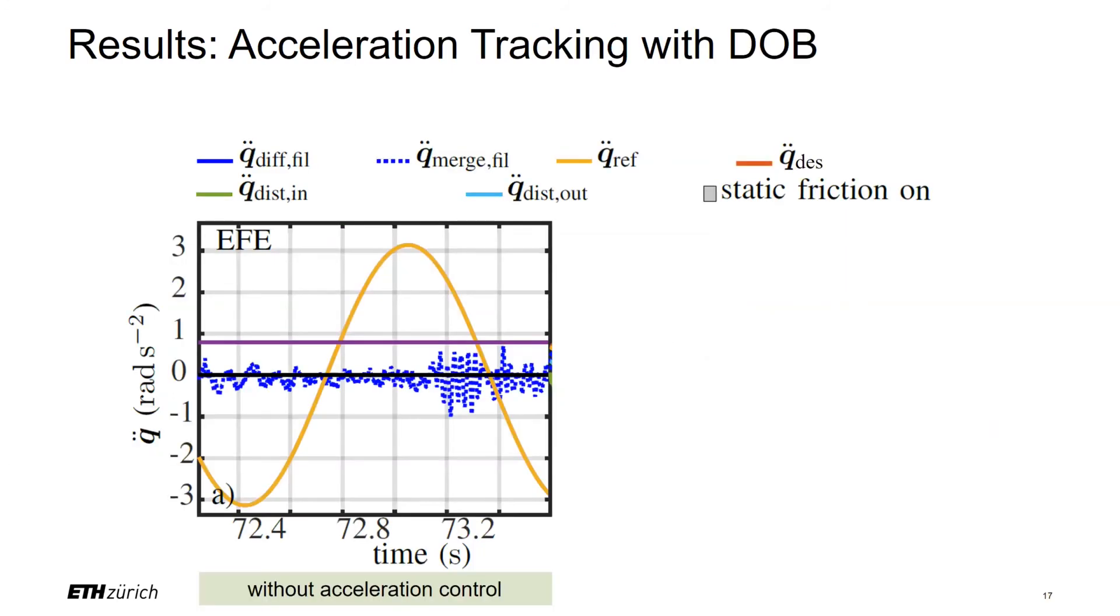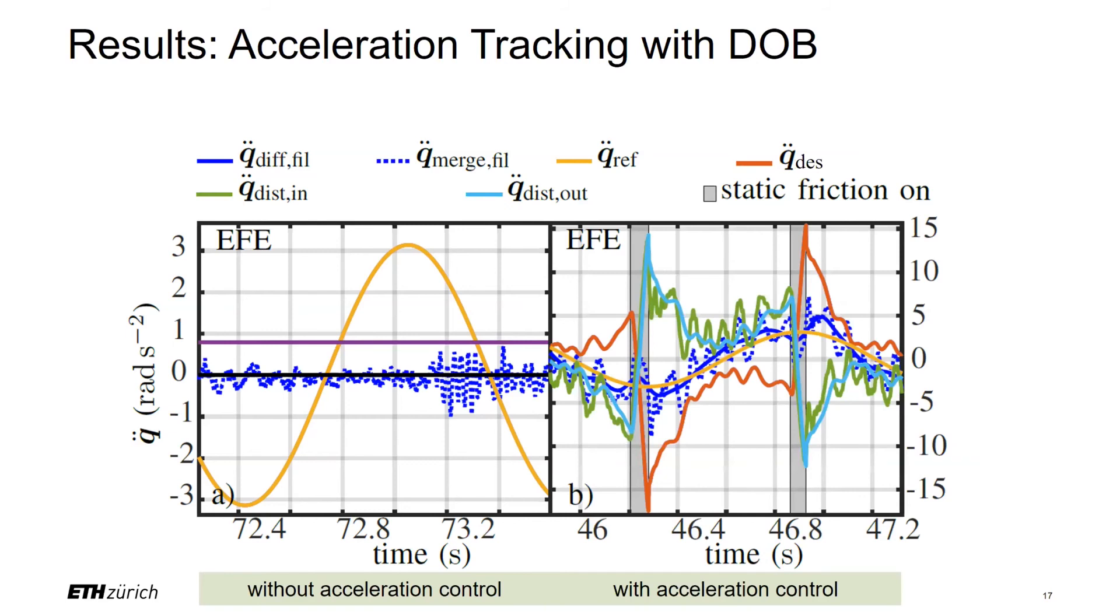To track the desired acceleration, we use a disturbance observer. The synthesis of this controller can be found in the paper. Here we can see the acceleration tracking performance without using the feedback controller. The robot does not even move, as the stick friction is quite high compared to the inertia of the link. At the right-hand side, we can see the performance of the active disturbance observer. The desired signal is well tracked. Further, we can see strong actions of the controller to compensate for the friction and other not-modeled torques.